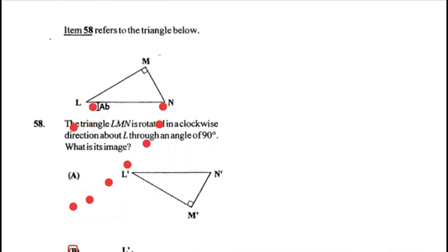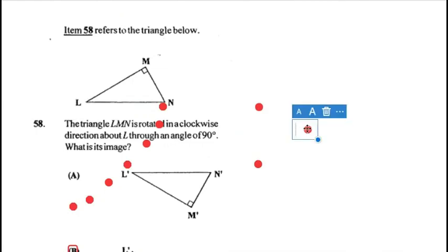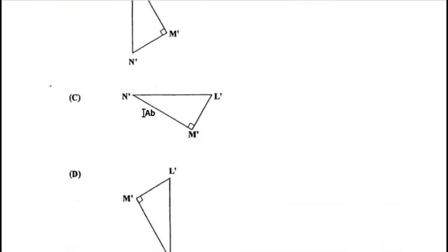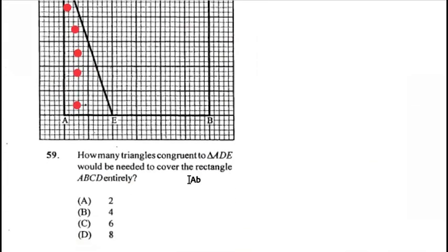Question 58: triangle LMN is rotated clockwise about L through 90 degrees. L remains stationary; N moves 90 degrees clockwise to a new position, and M moves to a corresponding new position. Looking for the diagram that best represents this relationship — answer is B.